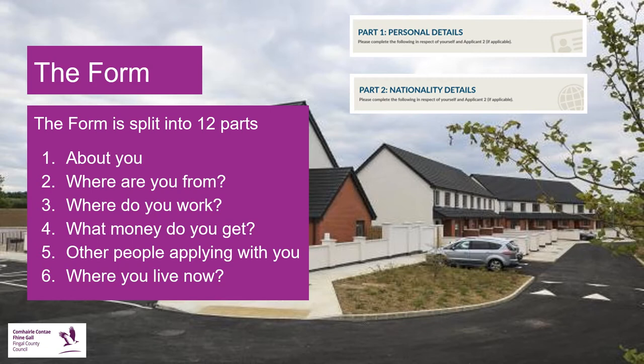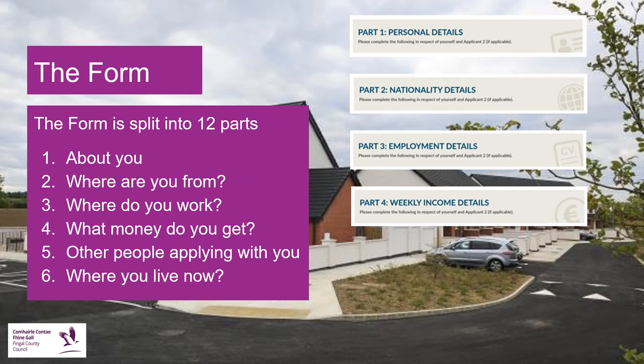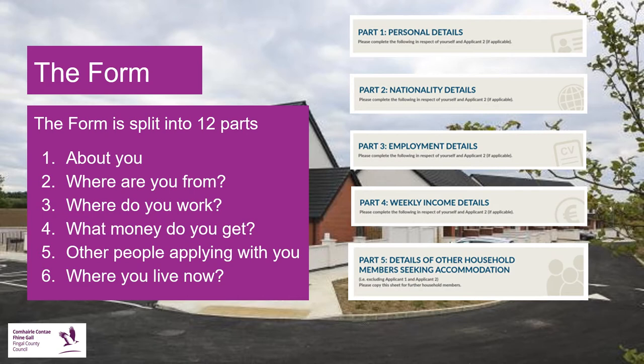Part three is employment details — whether you are working and the details of that work. Part four is income details, asking about the money you receive on a weekly basis. Part five covers other household members — the people who will live in the house with you, such as your partner or any children you may have.